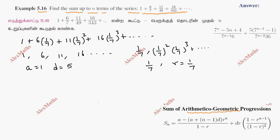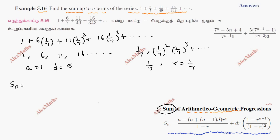Now the formula for the sum is: Sn equals [a minus (a plus (n minus 1) into d) into r^n] divided by (1 minus r), plus d times r times (1 minus r^(n-1)) divided by (1 minus r) squared.